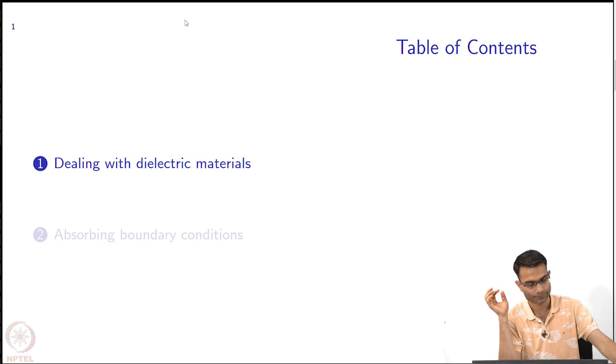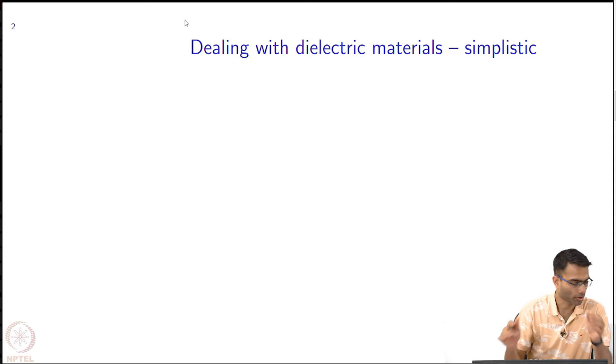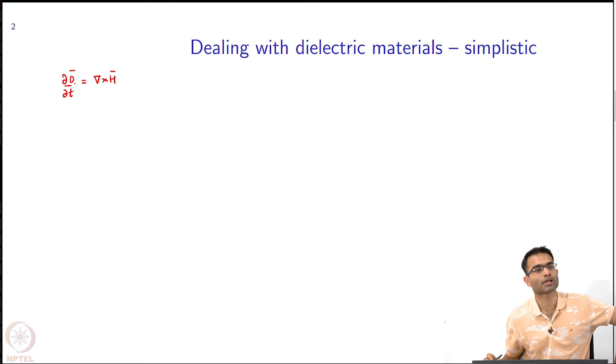We will start with dielectric materials. Your Maxwell's equations said, for example, curl of H. Supposing I have a dielectric material, what is the constitutive relation I used? How would I introduce the permittivity of the object in here?